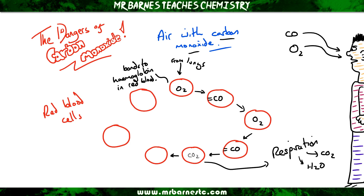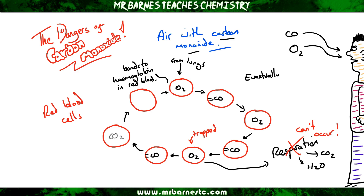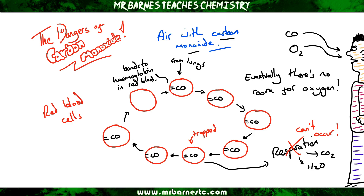However, when the carbon monoxide gets to its target cell it doesn't do anything — it's trapped, it cannot move. So it stays in the red blood, which means respiration cannot occur. Eventually this process will continue until there is no room for oxygen, so there's only carbon monoxide in the blood.